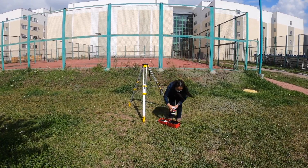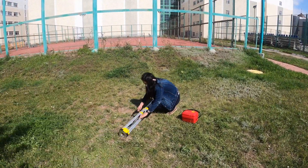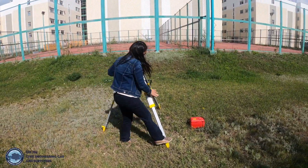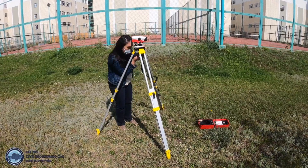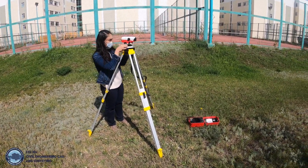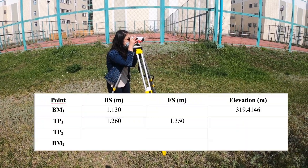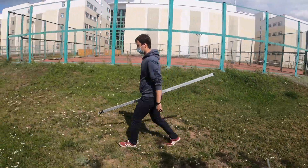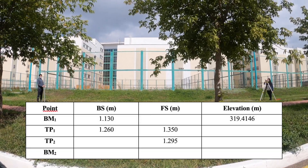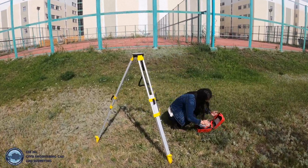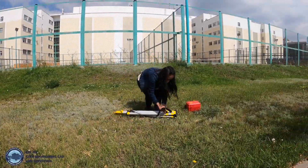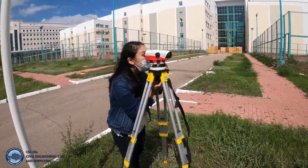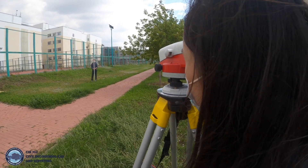When measurements of these points are completed, I carefully move the leveling equipment in its case for transportation to the next measurement point. The measurement of the backside at turning point one is now taken. Next, Eldar moves to turning point two and I take the measurement of the foresight at this turning point. We repeat the procedure, moving to the next measurement point. The backside of turning point two has now been measured.